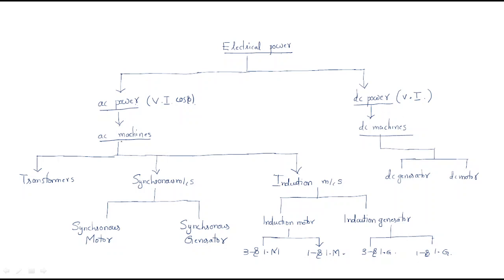AC machines are of three types. First is the transformer. Second is synchronous machines. Third is induction machines. Whenever you have AC machines, simply remember these three types: transformer, synchronous machines, and induction machines.